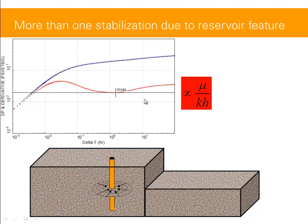So at early time — in this case about one hour on the log scale — you will have radial flow regime near the well in the horizontal plane. Further away from the well, on the log scale at around 80 hours, you've got a second stabilization, and that's due to the reduction in net thickness. So higher stabilization as well.